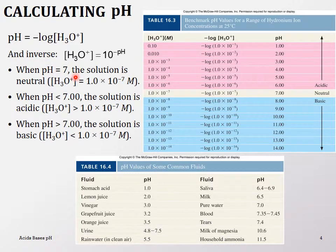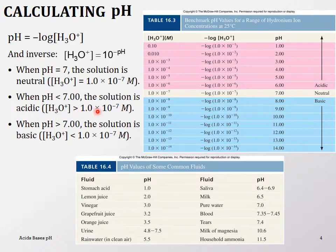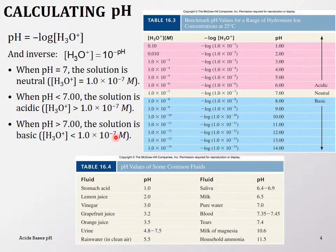When pH equals 7, the solution is neutral — the hydronium ion concentration is 1×10⁻⁷. When pH is less than 7, the solution is acidic and the hydronium ion concentration is greater than 1.0×10⁻⁷. Remember, a greater hydronium concentration means a smaller exponent. When pH is greater than 7, the solution is basic and the hydronium ion concentration is less than 1.0×10⁻⁷.